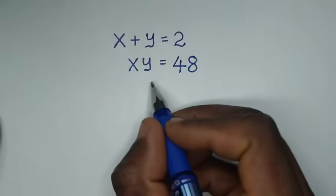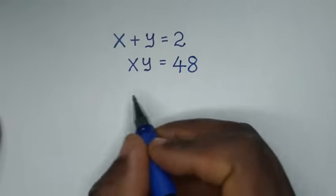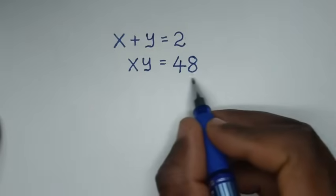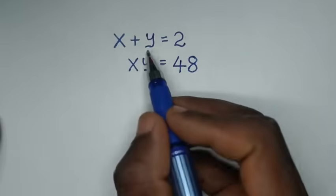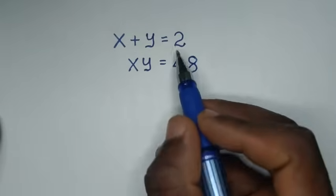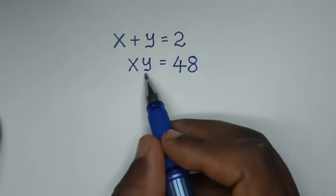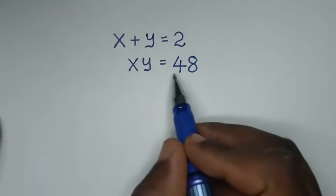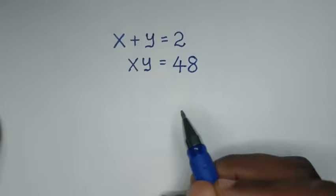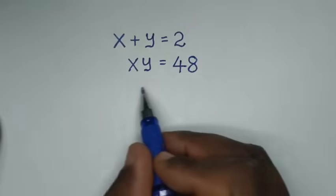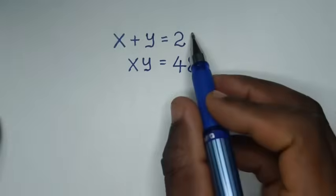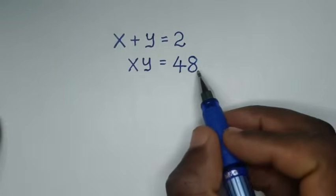Hello, you are welcome to solve this math problem, which is x plus y is equal to 2, and x times y is equal to 48. We need to find the values of x and y from these two systems of equations.